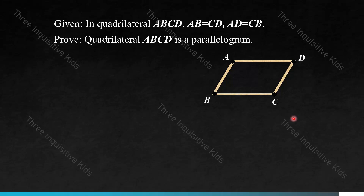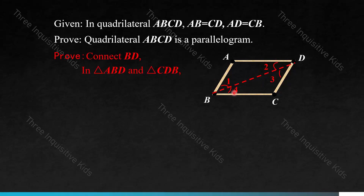Given quadrilateral ABCD where AB equals CD and AD equals CB, how can we prove that quadrilateral ABCD is a parallelogram? Here is our proving process. We can connect BD, creating a diagonal that forms four angles: one, two, three, and four.